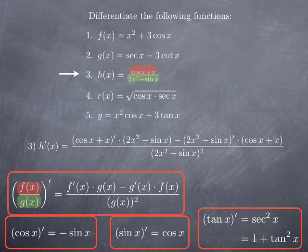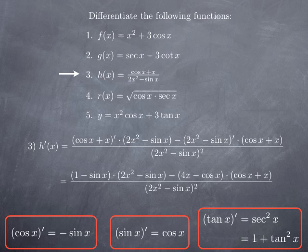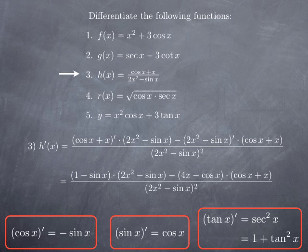What remains to be done is to calculate the two derivatives. Derivative of cosine x plus x first: the derivative of cosine x is negative sine x, and of x is 1, so we get 1 minus sine x. For the second derivative, the derivative of 2x squared minus sine x, we get 4x for the derivative of 2x squared, and cosine x for the derivative of sine x, so we obtain this formula for the derivative of h.